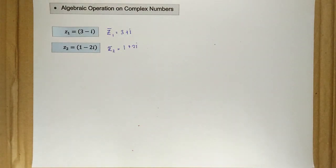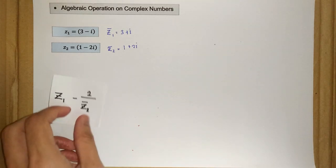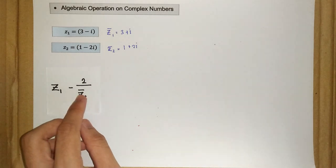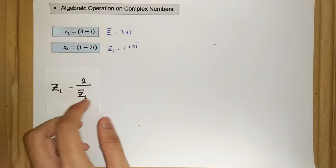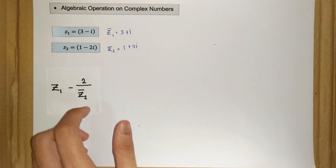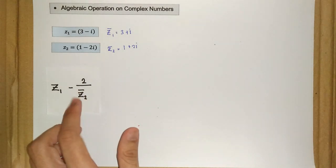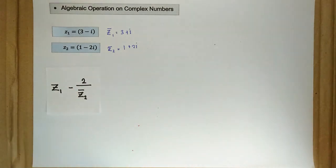So let's say we want to find the expression of z1 minus 2 over z2 bar. This term is the complex conjugate for z2, so we have to be careful with these terms.